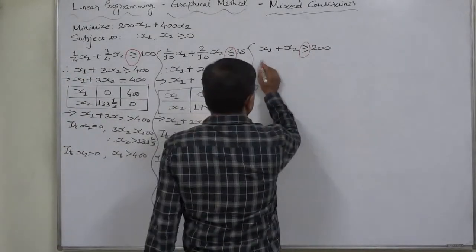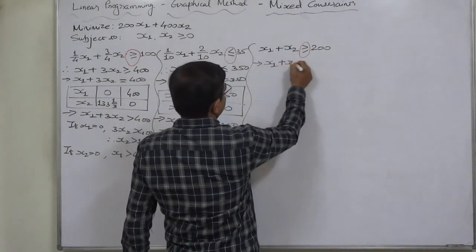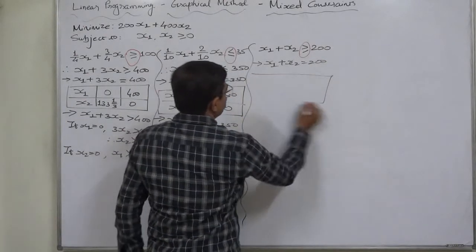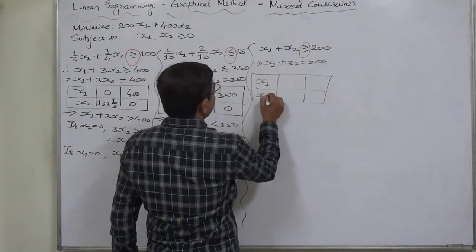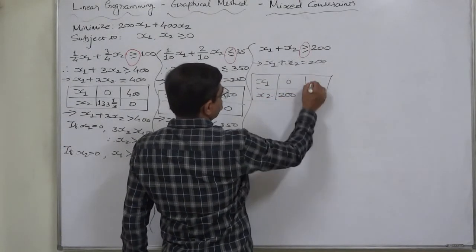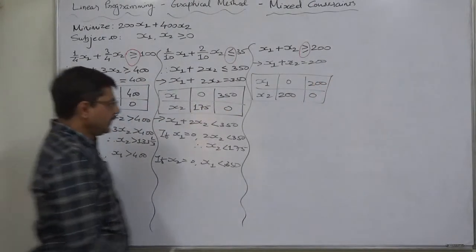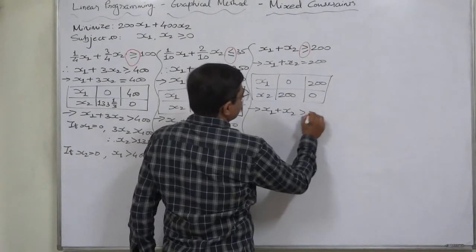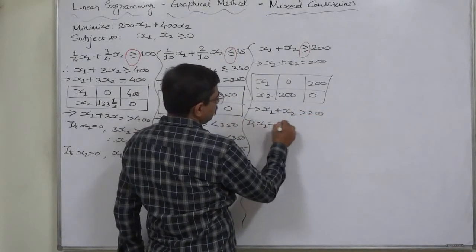For the third constraint, again the sign is greater than or equal to. The equation is x1 plus x2 equals 200. The two points are (200, 0) and (0, 200). If x1 is 0, x2 is 200; if x2 is 0, x1 is 200. The inequality x1 plus x2 greater than 200: if x1 is 0, then x2 greater than 200.